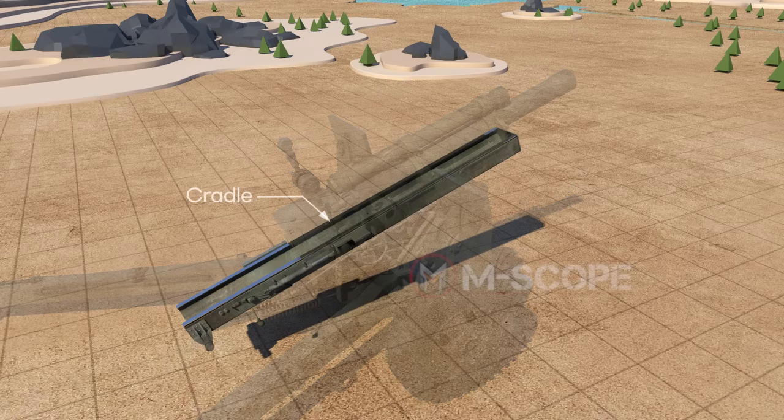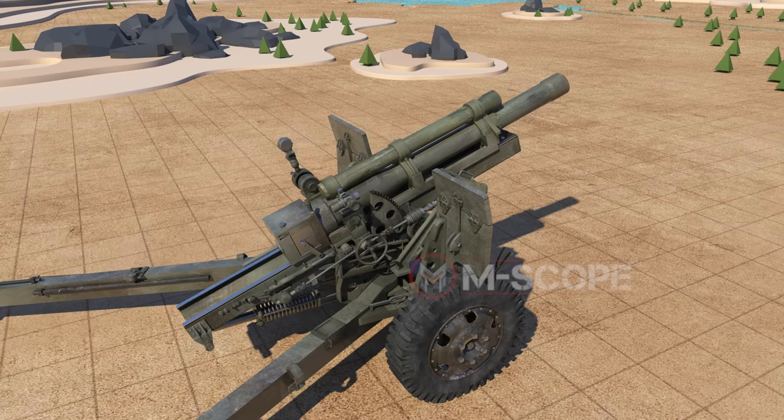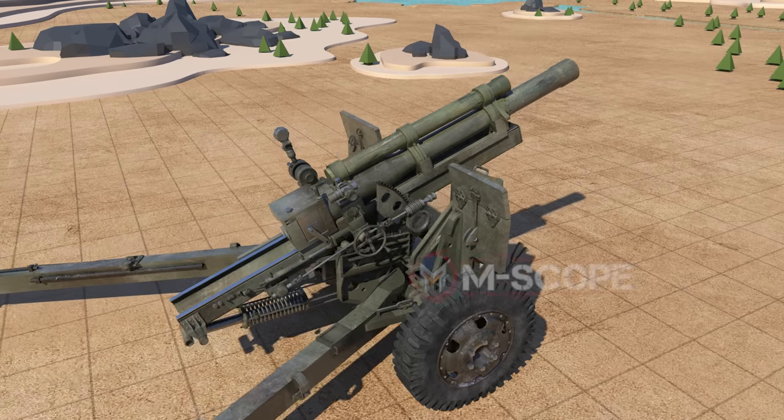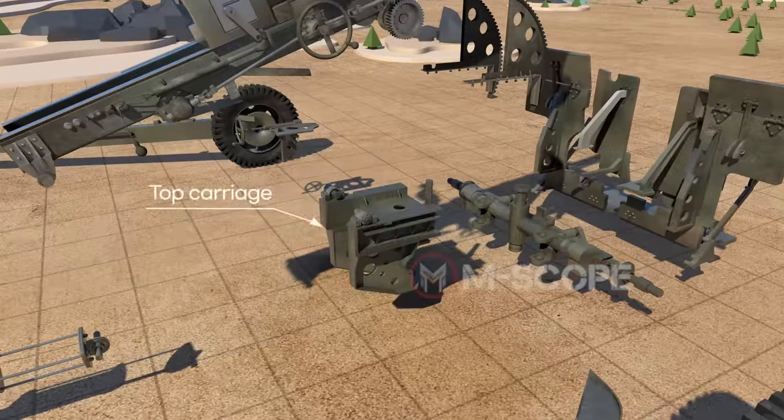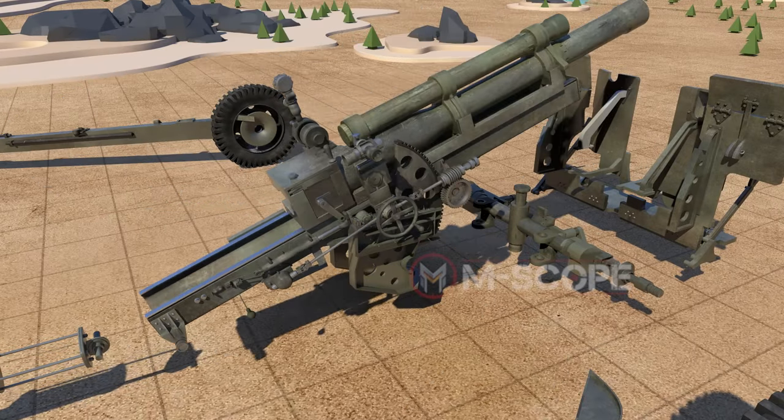Situated below the recoil mechanism is the cradle which upholds the cannon tube and other parts. A cradle also works as a rail for the cannon tube to slide on.